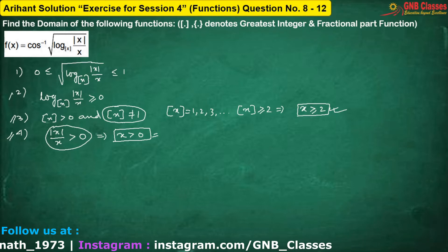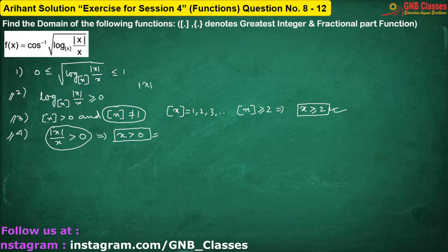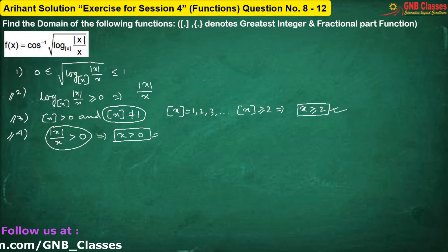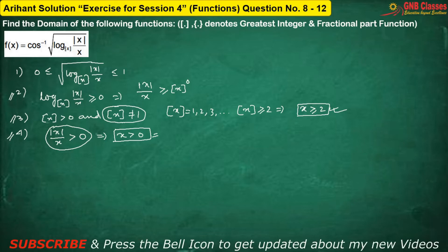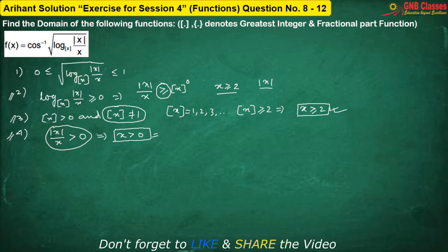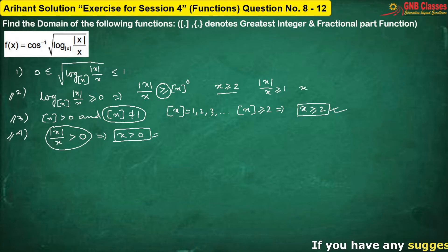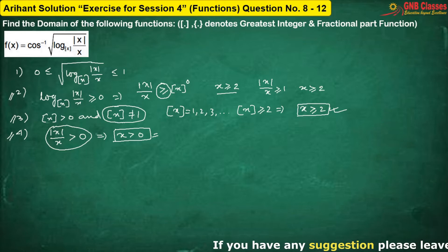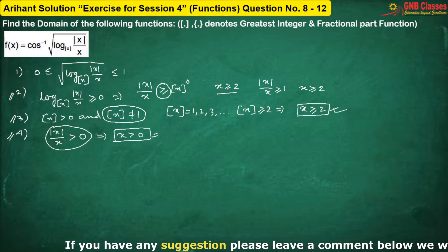Now for the second condition: we can write mod(x)/x will be greater than or equal to floor(x) to the power 0. I have not changed the sign because we know x is greater than or equal to 2. Therefore, mod(x)/x is greater than or equal to 1, which is always true for x ≥ 2.